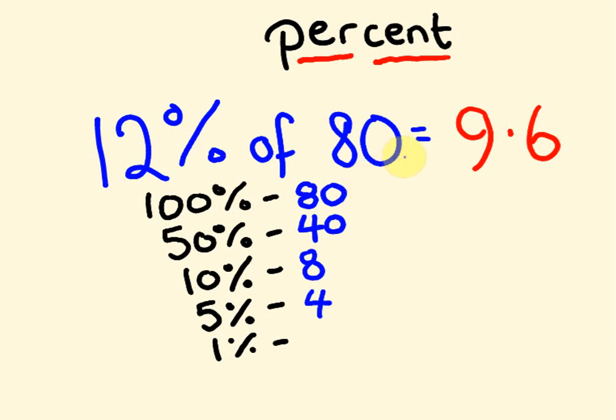And then we have 1%. Now, 1% is one part out of 100, and to do this, we divide by 100. We move the decimal place back not once, but two times. So we go back one, two times. So 1% here is 0.8. 1% of 70 is 0.7. 1% of 120, we move it back twice, so 120 would be 1.2.